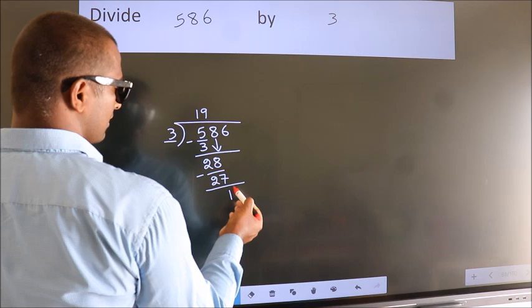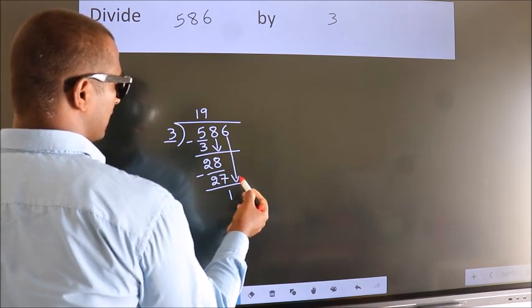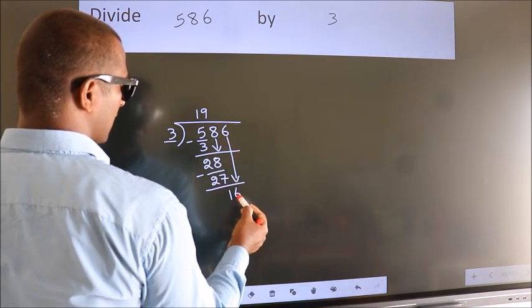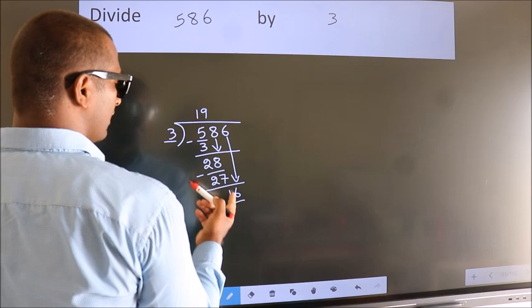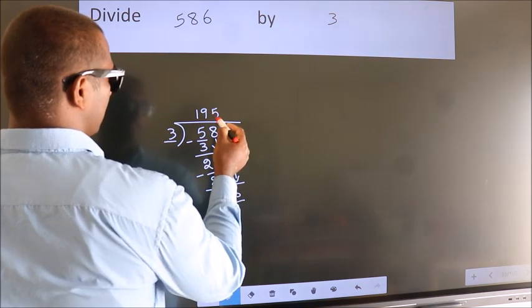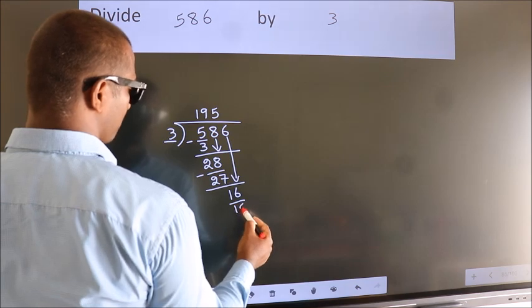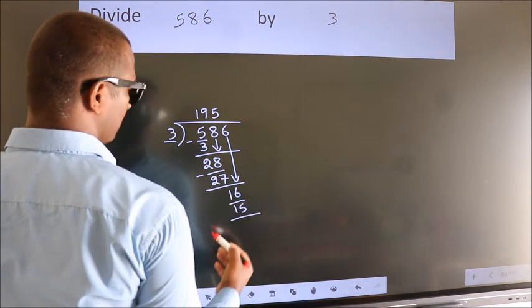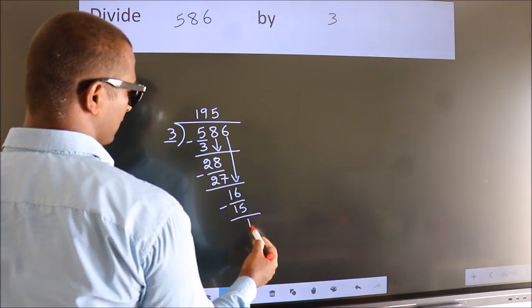After this, bring down the beside number, so 6 down, so 16. A number close to 16 in 3 table is 3 times 5, which is 15. Now we subtract, we get 1.